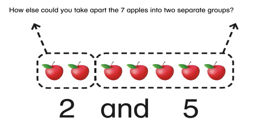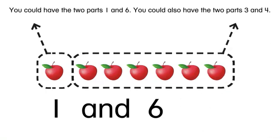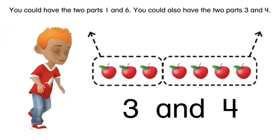How else could you take apart the seven apples into two separate groups? You could have the two parts one and six. You could also have the two parts three and four.